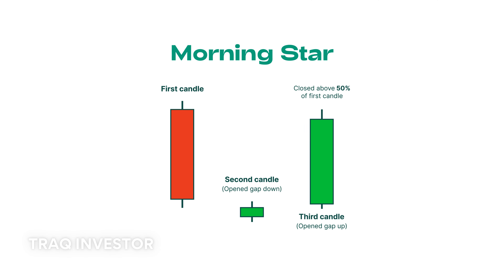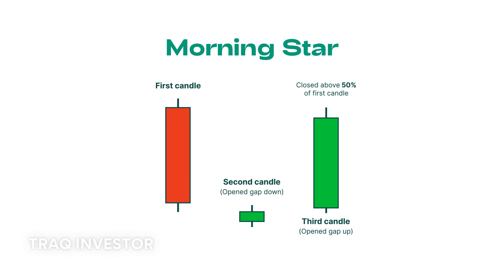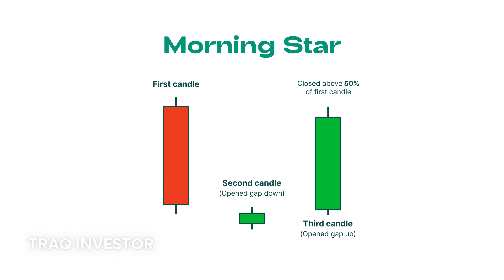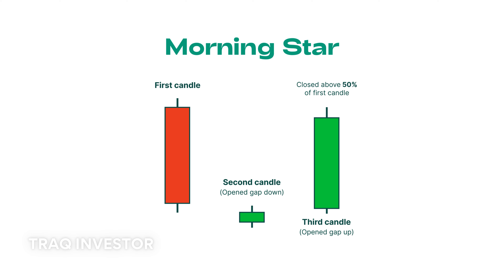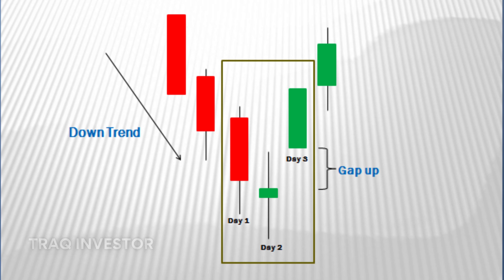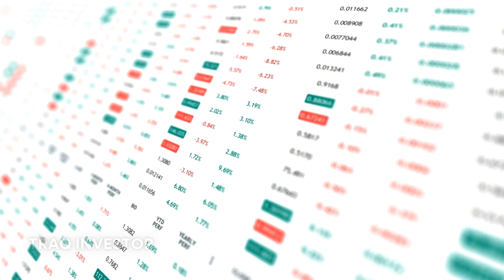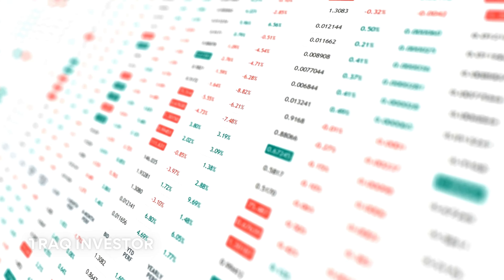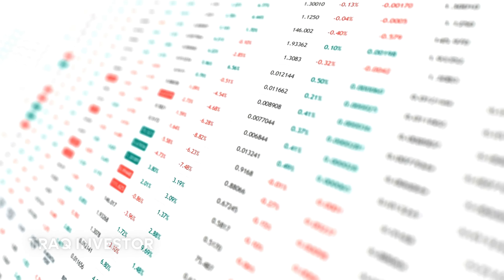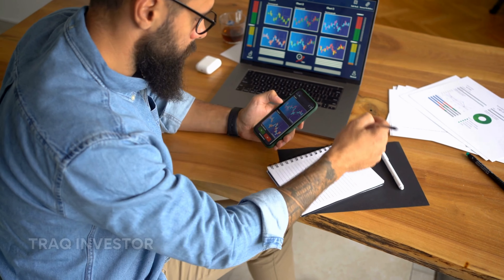The morning star candlestick pattern is often seen as a beacon of hope in a gloomy market downtrend. It's a three-stick pattern with a short-bodied candle nestled between a long red and a long green one. Traditionally, the star should have no overlap with the longer bodies as the market gaps both on open and close. This pattern signals a subsiding selling pressure from the first day, hinting at the emergence of a bullish market on the horizon.